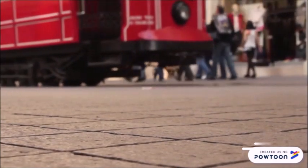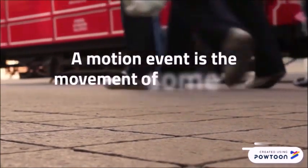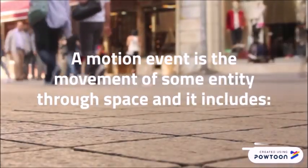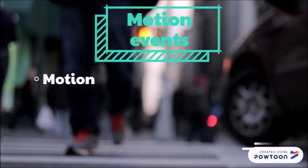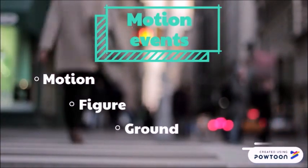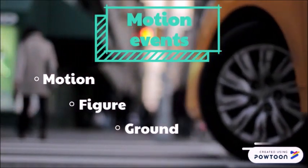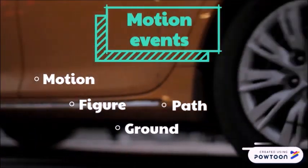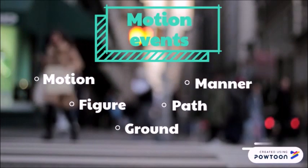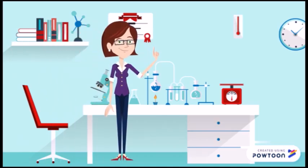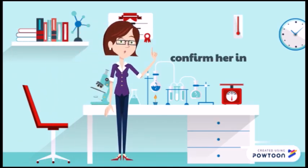It's important to remember that a motion event is the movement of some entity through space and it includes motion, the action itself, a figure, that is to say, the moving object, ground, which refers to the reference objects, path, which involves the direction of the motion, and manner, which expresses the way the action is performed. Bearing all this information in mind, Stam carried out her research in which she was able to confirm her initial ideas.